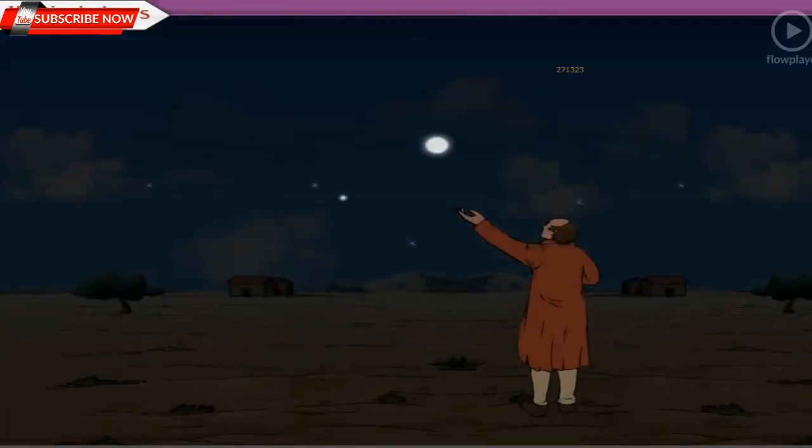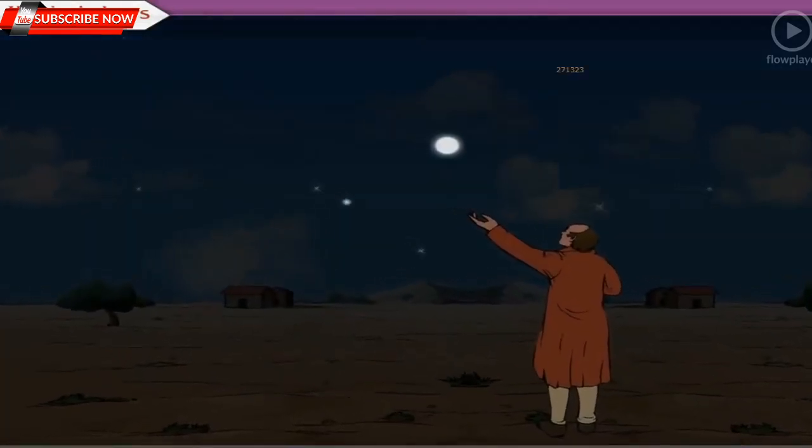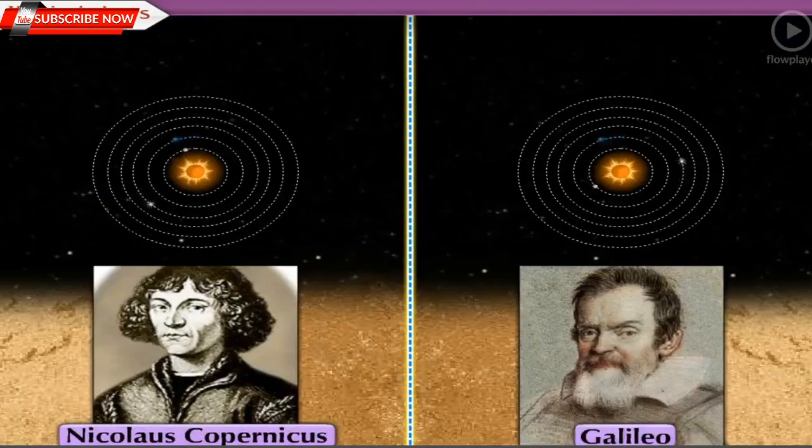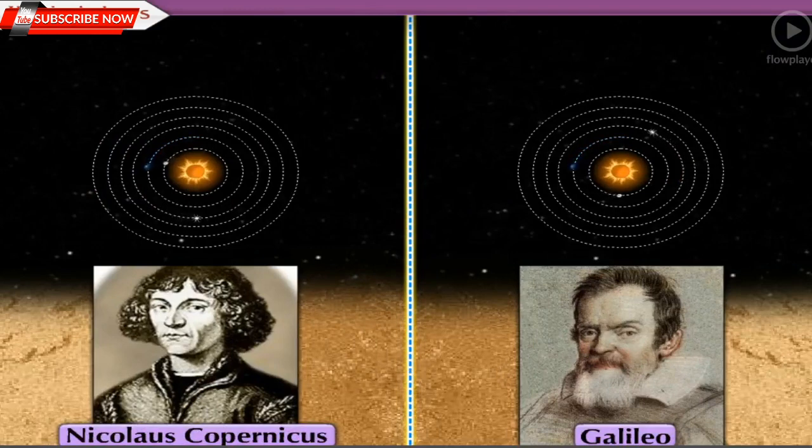Before Galileo, all observations about the positions of the planets were made with naked eyes. By the 16th century, a lot of data was available about planetary positions and motion.